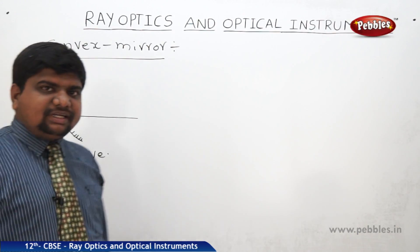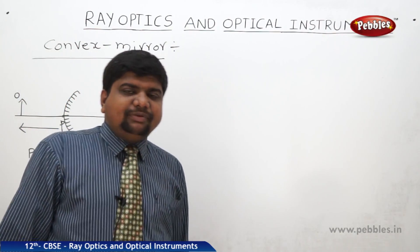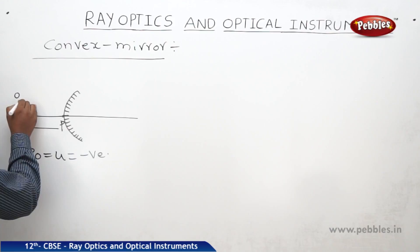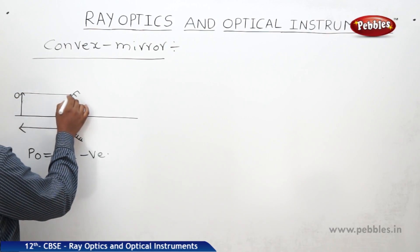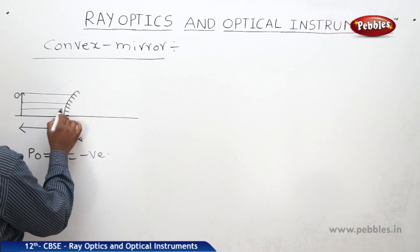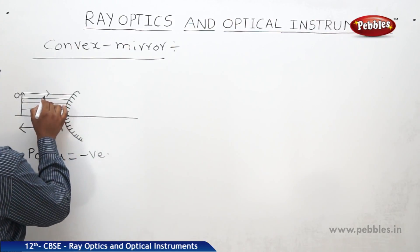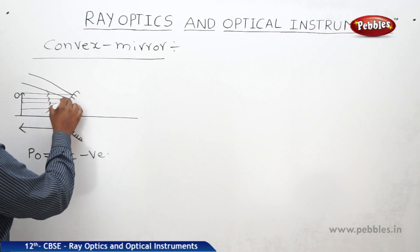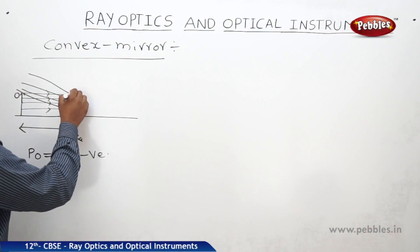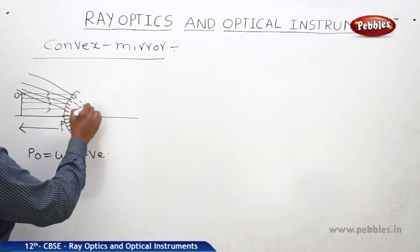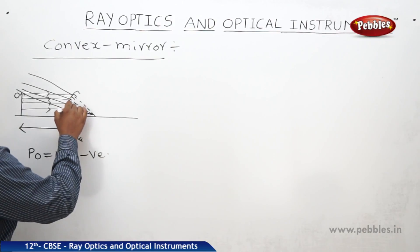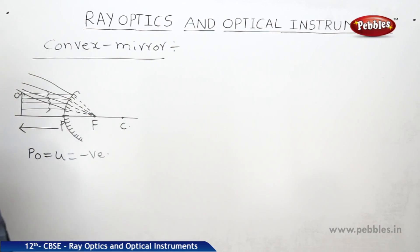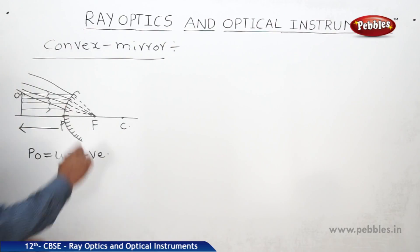Now, what is the nature of the convex mirror? All light rays appear to be diverged from one common point. Suppose if we increase the size of the object, these are all the incident rays, and they will appear to be diverged at a common point. This is F, this is C. So all light rays appear to be diverged from F — see the arrow marks.